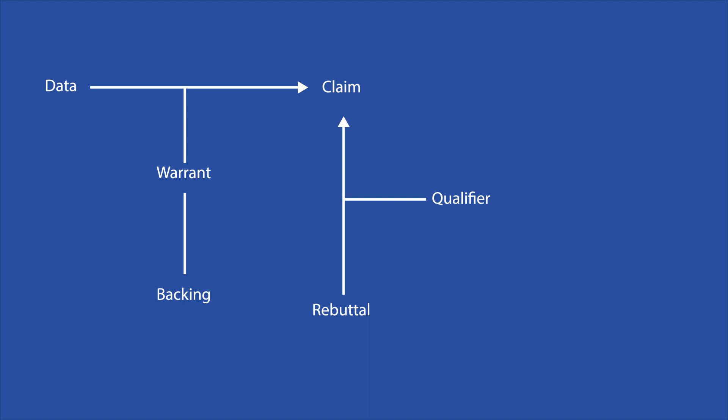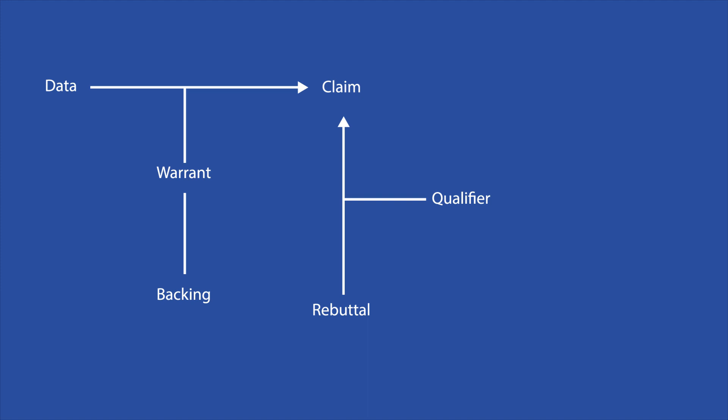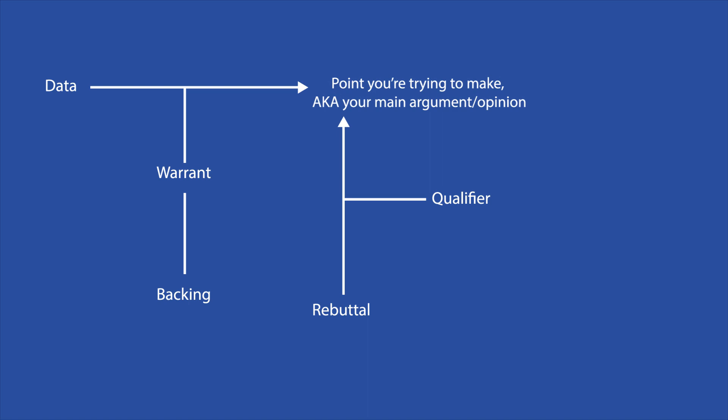The claim is the point you're trying to make, also known as your main argument or opinion. A claim should be debatable, meaning that people can agree or disagree with it, and not an indisputable fact. Let's use "To foster better communities, city budgets need to be redrawn" as an example claim.